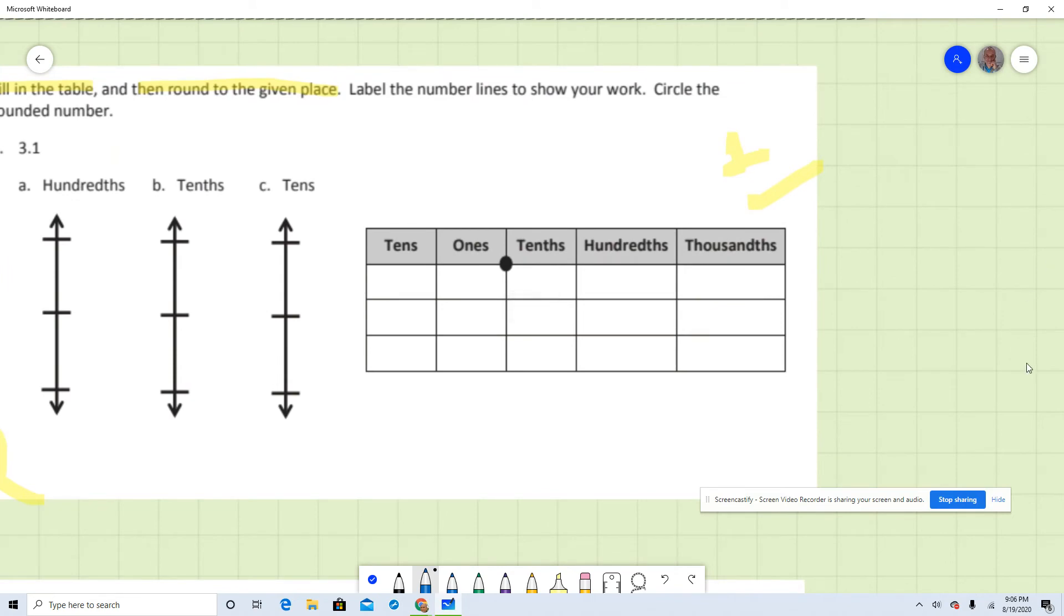Now let's look at the number that we need to round is 3.1. So we're going to write it here, 3.1. And they want us to round it to the nearest tens. How many tens will it be?